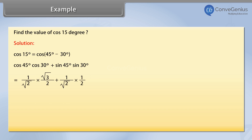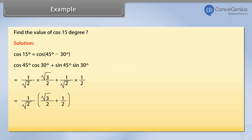Is equal to (1/√2) × (√3/2) + (1/√2) × (1/2). Is equal to (1/√2) into (√3/2 + 1/2). Is equal to (1 / 2√2) into (√3 + 1).